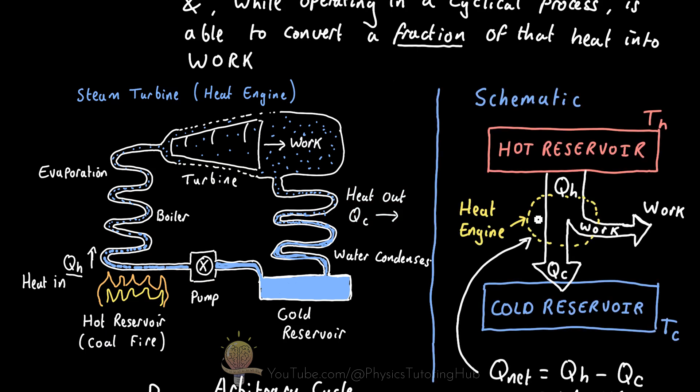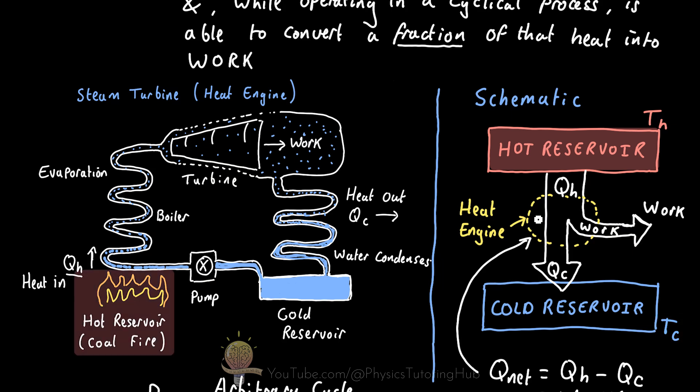We will often see heat engines represented with a schematic, and this will help us better visualize what's going on in the process of heat transfer and how we can work out the thermal efficiency of a heat engine. At the top of the schematic we have the hot reservoir with a temperature of T_H, which is higher than the cold reservoir, because we want a flow of heat from the hot reservoir down to the cold reservoir. This hot reservoir is equivalent to our coal fire.